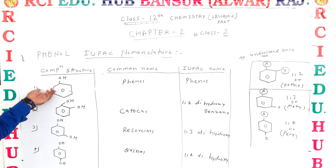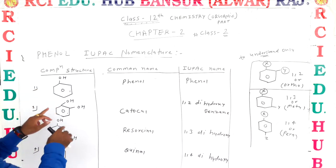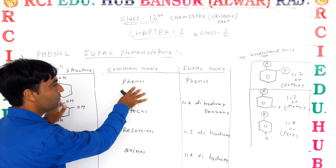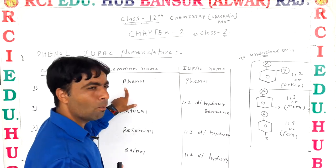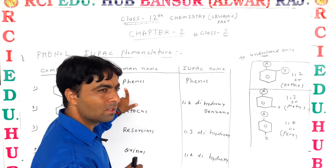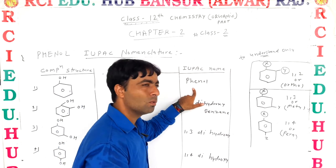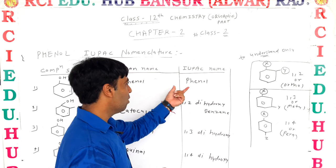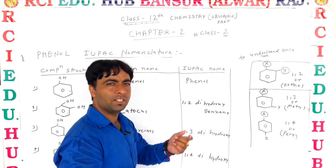Look, that is the first structure — phenol. What is the common name? It is phenol. The IUPAC name is also phenol, or hydroxybenzene.